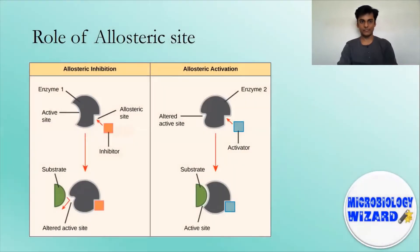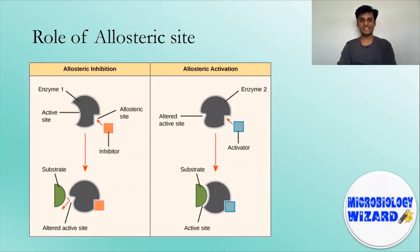The site to which the effector binds is termed as the allosteric site or regulatory site. Allosteric site allows effectors to bind to the protein, often resulting in a conformational change involving protein dynamics. Effectors that enhance the protein's activity are referred to as allosteric activators, whereas those that decrease the protein's activity are called allosteric inhibitors. Allosteric regulations are a natural example of control loops such as feedback from downstream products or feed-forward from upstream substrates. Long-range allostery is especially important in cell signaling, and allosteric regulation is also important in cells' ability to adjust enzyme activity.